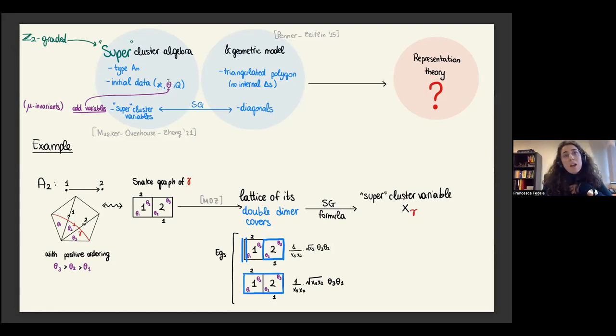For type A, we have some initial data again: an initial set of even variables, the X's which are cluster variables, an initial set of odd variables which are called mu invariants and they anti-commute with each other and commute with the even ones, and then an initial super quiver. Using some super Ptolemy relations you can build the supercluster variables or super lambda lengths more specifically. The geometric model is again a polygon with an initial triangulation which has to have no internal triangles and which has to be oriented this time. The diagonals again through some snake graph formula correspond to the supercluster variables.